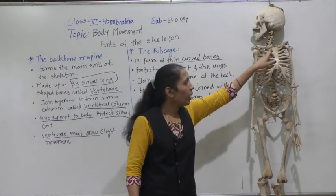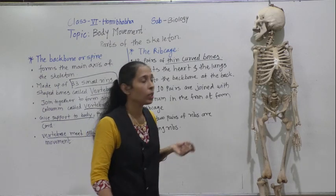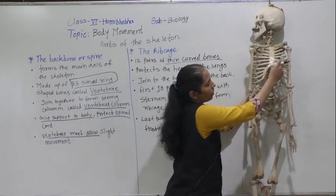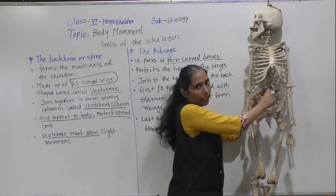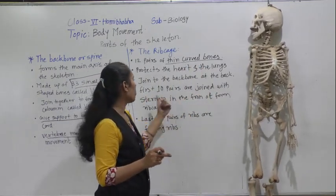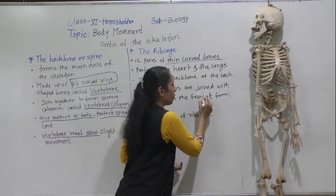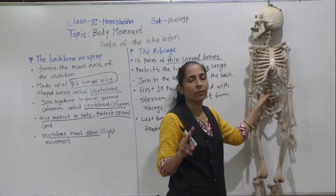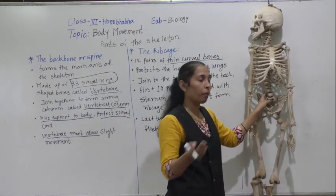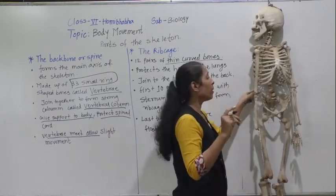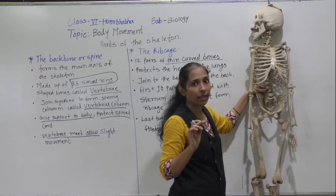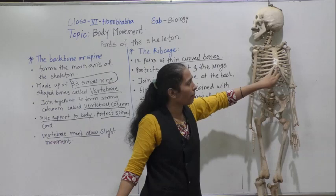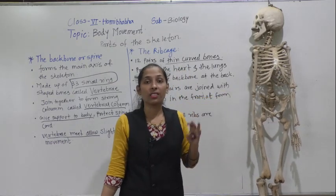All 12 pairs of ribs are joined to the backbone from the back side. From the front side, the first 10 pairs of ribs are connected to one bone called the sternum — also known as the chest bone or breast bone. You can see that this single front bone is the sternum.